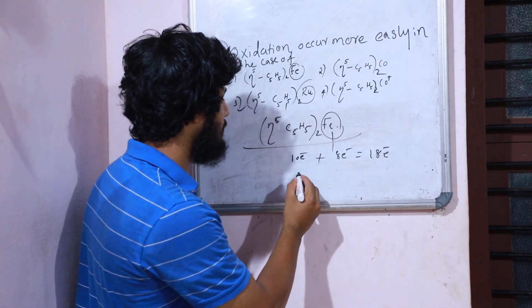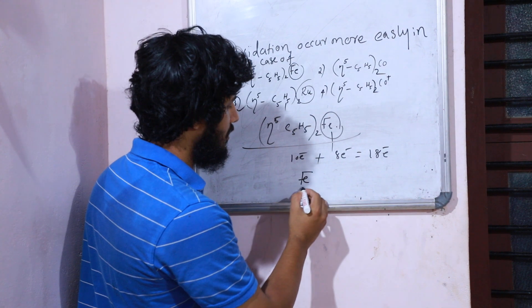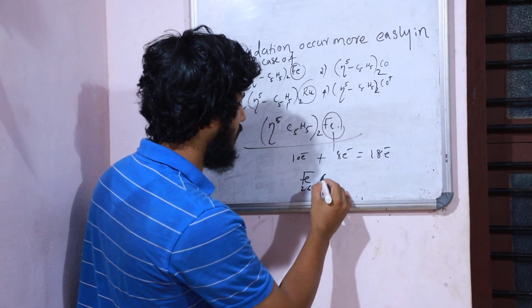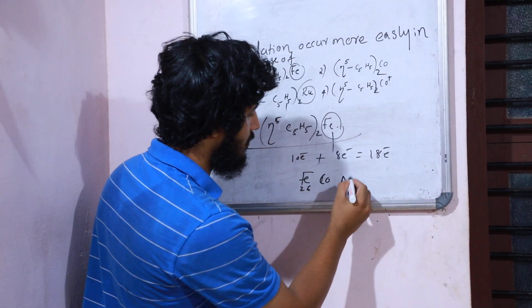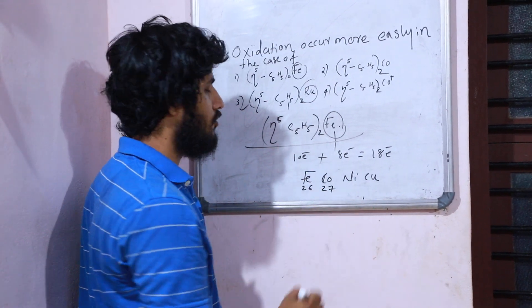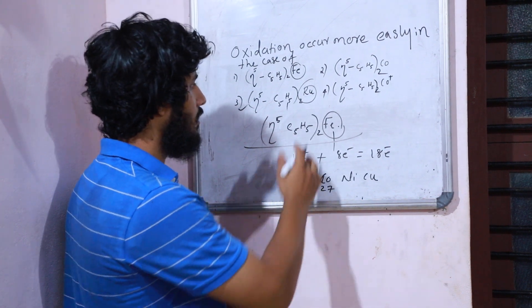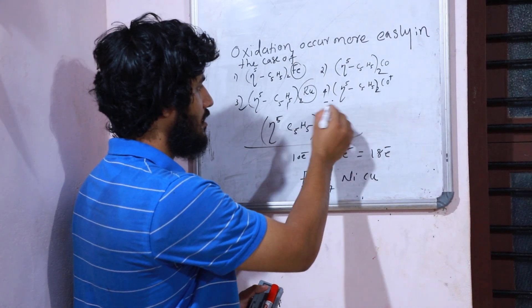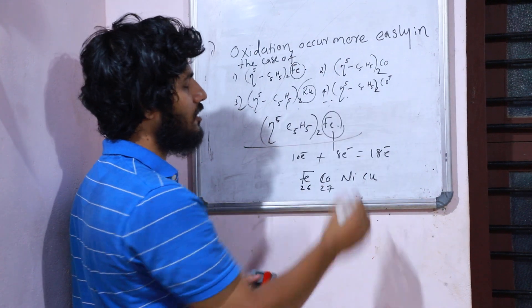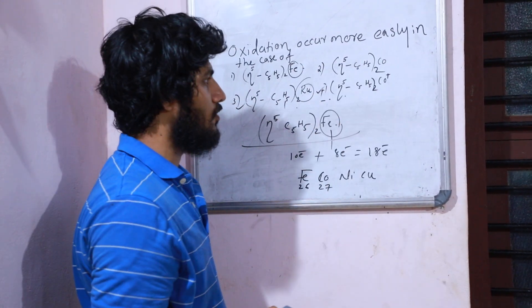In the periodic table, iron has atomic number 26, and cobalt is 27. So cobaltocene and ferrocene are isoelectronic species. However, cobaltocene also obeys the 18-electron count when considered alongside ferrocene due to its isoelectronic nature.